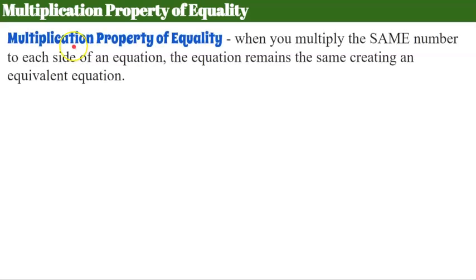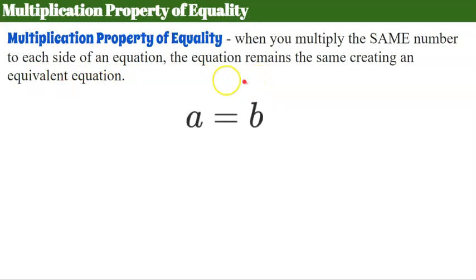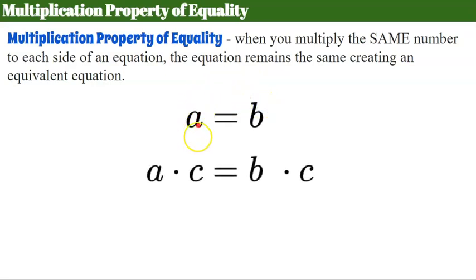Algebraically, we refer to this as the multiplication property of equality. It states that when you multiply the same number to each side of an equation, the equation remains the same, creating an equivalent equation which is your solution. If a equals b and we multiply a by c, we must also multiply b by c, and this equation will be equivalent to the original.